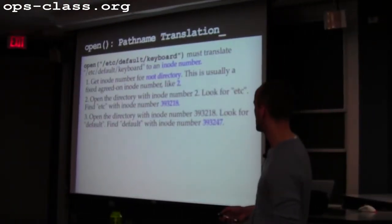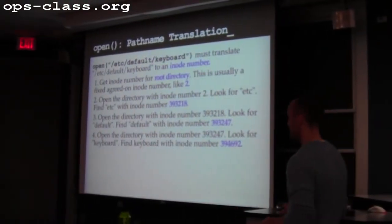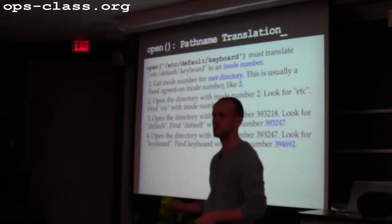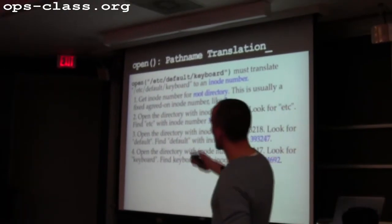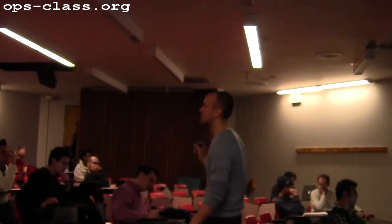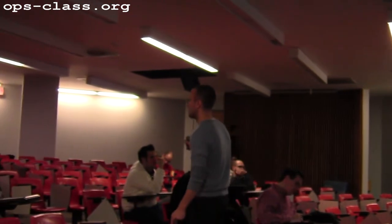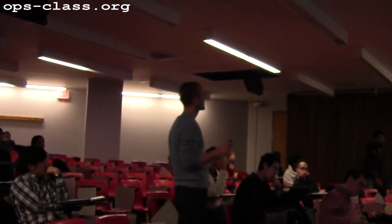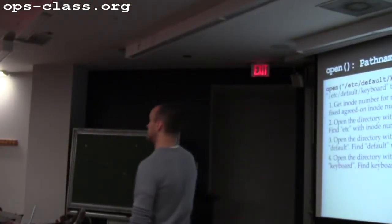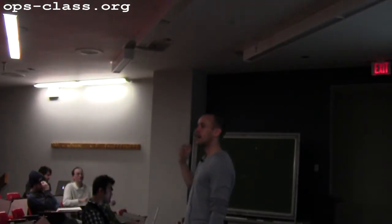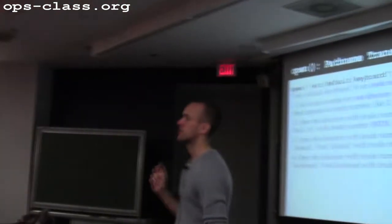This is how I translate paths. Any questions about path name translation? What happens if the path is not an absolute path — if it's a relative path? I have to work with the current working directory. If the process asks me to open '../etc/default/whatever', I perform the same process, but instead of starting with the root inode, I start with the inode that corresponds to the current working directory of the process.